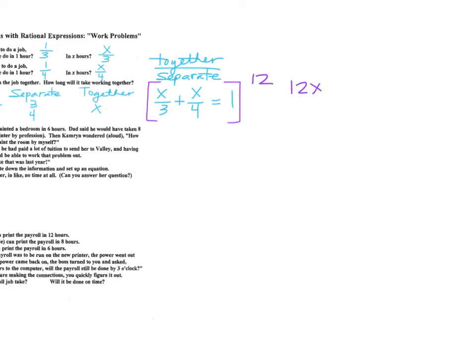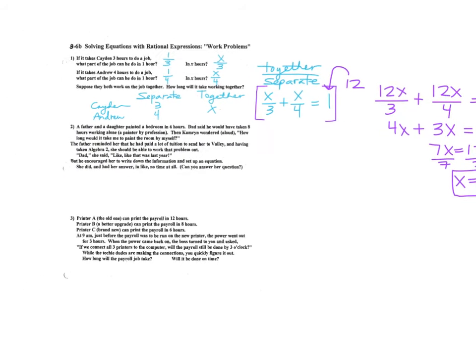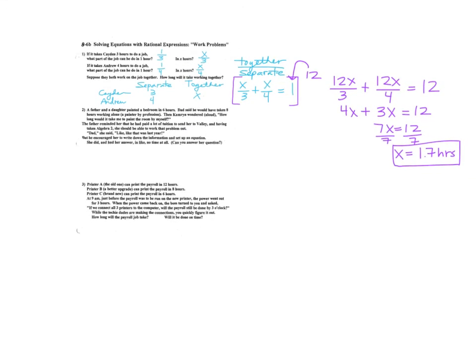So on top, I would get 12x over three. The second one, I would get 12x over four. And then don't forget, I don't know about you, but I always forget this one for some reason. Maybe because it's a one. 12 times one is 12. And then solve that. 12 over three is 4x. 12 over four is 3x equals 12. So we get 7x equals 12. Divide by seven. So x is, you could call it 12 over seven, or that works out to 1.7 hours.